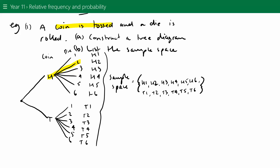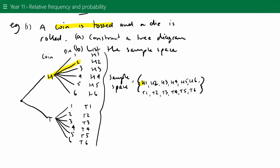So the sample space, listed in curly brackets, is: H1, H2, H3, H4, H5, H6, T1, T2, T3, T4, T5, and T6. If asked how many elements are in the sample space, there are 12 elements.